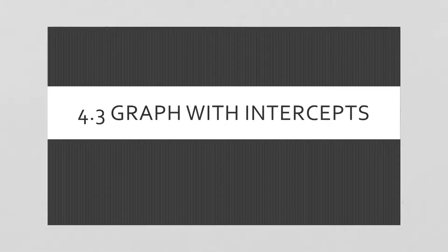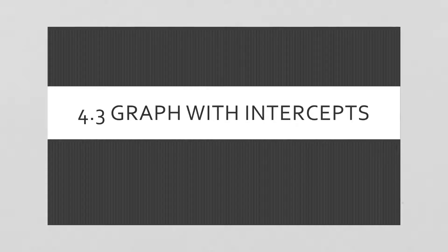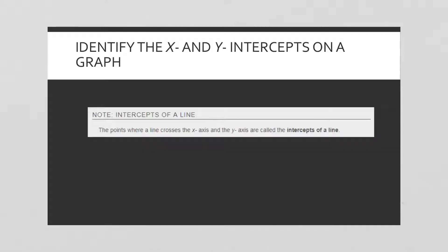What we're learning now is actually something we've already done — we just did not put a name with it before. So this should not seem unfamiliar to you at all. Today we're going to graph with intercepts. The points where a line crosses the x-axis and the y-axis are called the intercepts of the line.